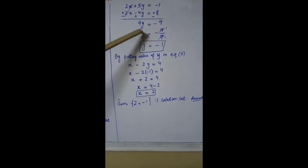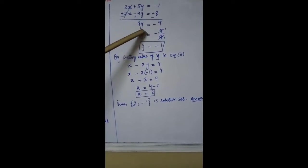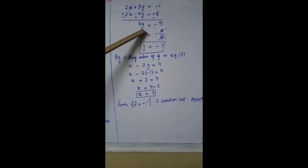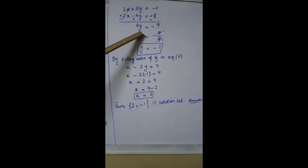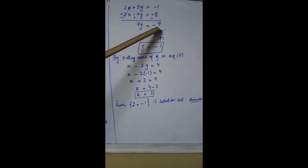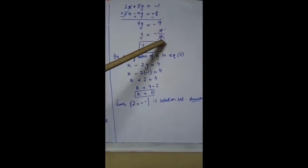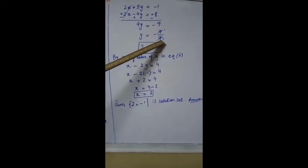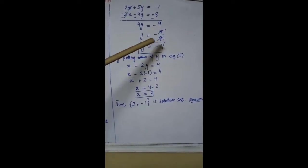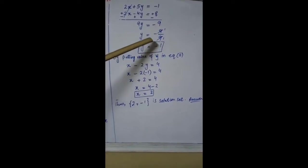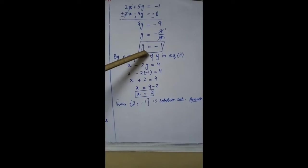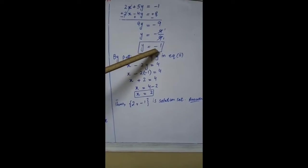Dividing both sides by 9: y = -9 ÷ 9 = -1. So y = -1 is our value of y.